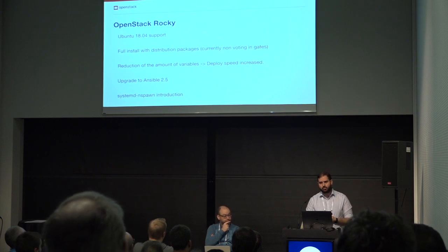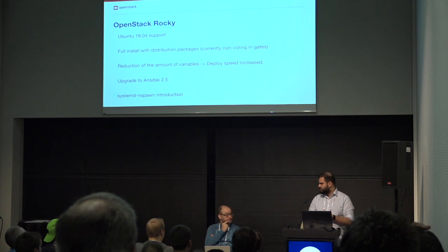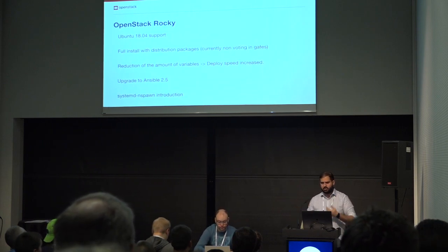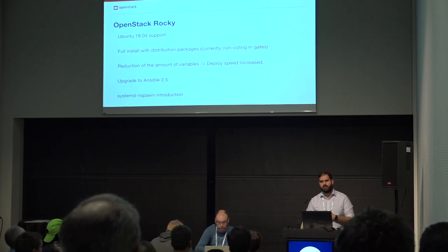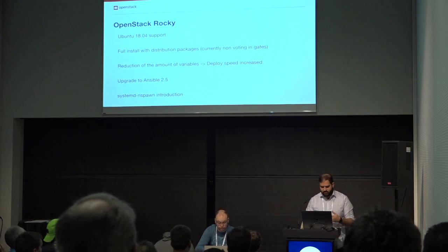We did a significant reduction in the number of overridable variables. When there are a lot of them, memory starts blowing up and Ansible slows down significantly. This increased deployment speed and removed cruft from five years ago that was slowing our gate by around 25% and making it unstable. We've also upgraded to Ansible 2.5, trying to keep up with the latest releases.